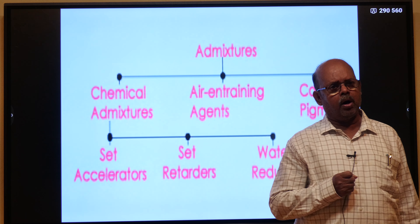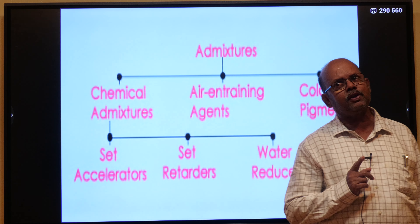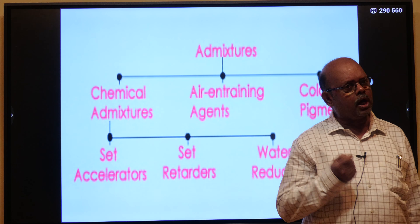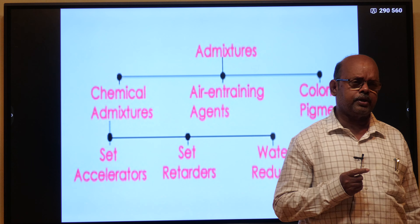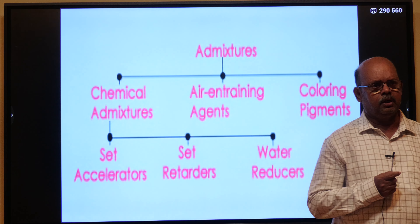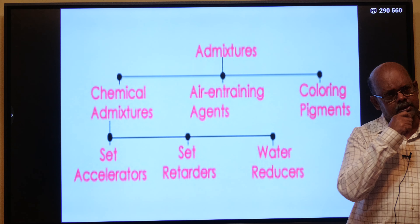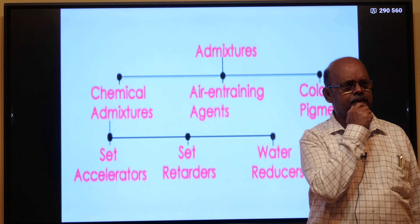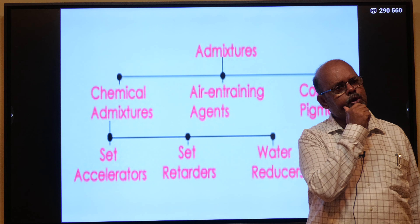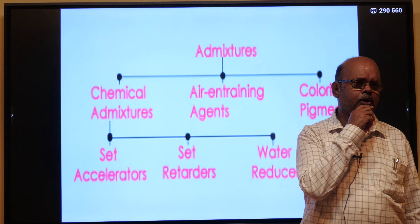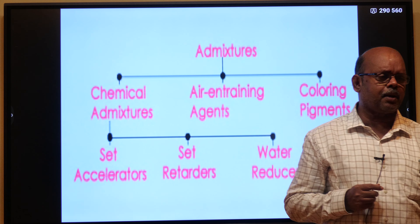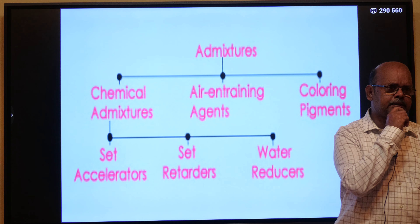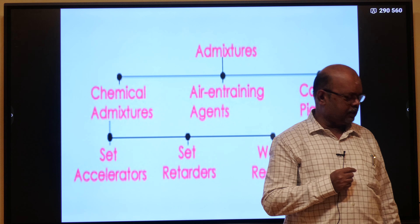Concrete creates a lot of environmental issues because while manufacturing cement, carbon dioxide is emitted, which is directly hazardous to the atmosphere. We can make use of admixtures for partially replacing cement and to improve the quality of concrete without increasing the amount of cement. Different admixtures are: chemical admixtures, air entraining agents, colouring pigments, accelerators, retarders, and water reducers.